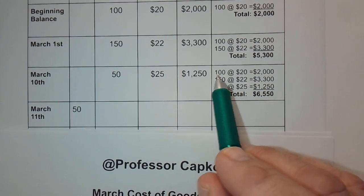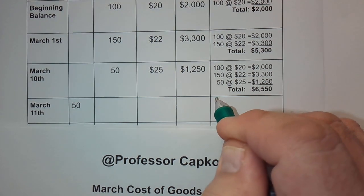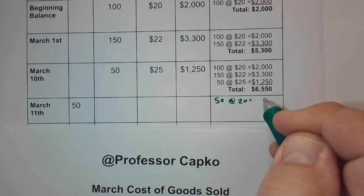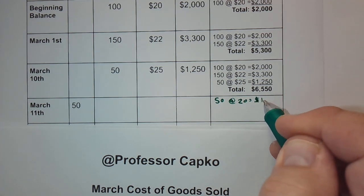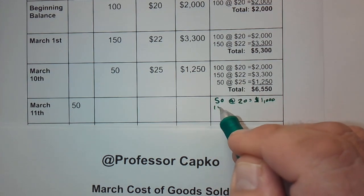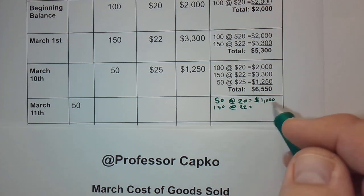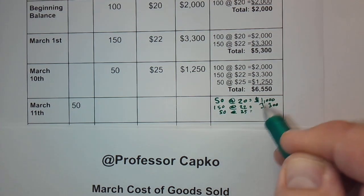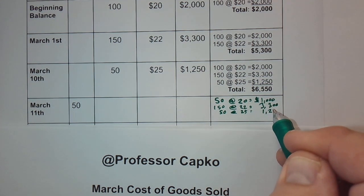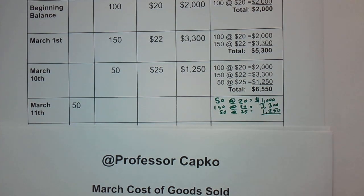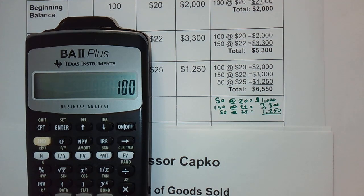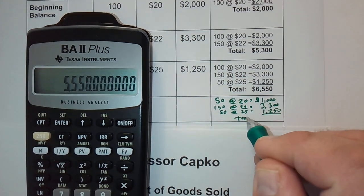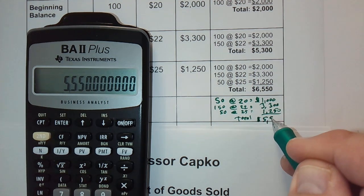We sold 50 of the first batch, so only 50 remain at $20 per unit — $1,000. We still have all 150 units at $22 ($3,300), and all 50 units at $25 ($1,250) untouched. Adding those together, our total inventory balance after the March 11th sale is $5,550.